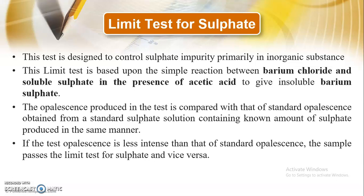Similar to the chloride test, both limit tests involve the formation of opalescence and comparing it with a standard. The soluble sulphate present in the sample reacts with barium chloride in presence of acetic acid to give barium sulphate. The precipitate of barium sulphate formed is insoluble in nature, and additionally there will be formation of chloride. This barium sulphate produces the opalescence that we compare with our standard.